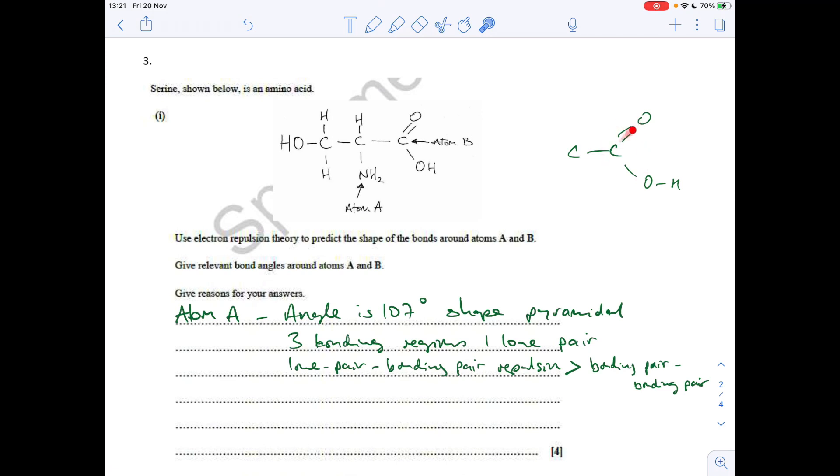We're going to get equal repulsion from the three bonding regions. Remember, we class a double bond as just a bonding region, so there's no extra repulsion. The shape associated with that would be trigonal planar, and the angle would be 120 degrees. Angle 120, shape trigonal planar, three bonding regions, equal repulsion.